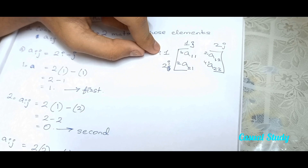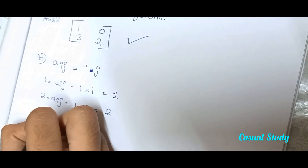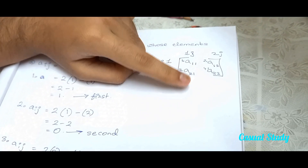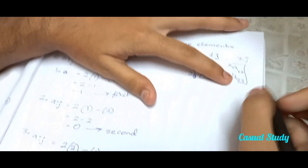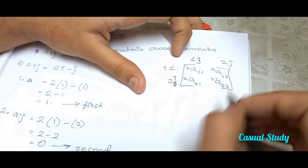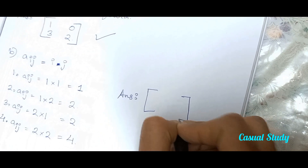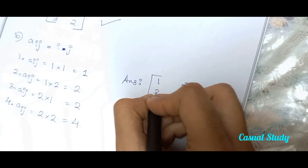So 1 times 1 equals 1. For the second element, A[i,j] equals i times j — the second element has i, that is row value 1, and column value 2. So it's going to be 1 times 2, that is 2. The third value is going to be — the i value is 2 and j value is 1, so it's 2 times 1, which is also 2. Our fourth value — i is 2 and j is 2, so 2 times 2 equals 4.